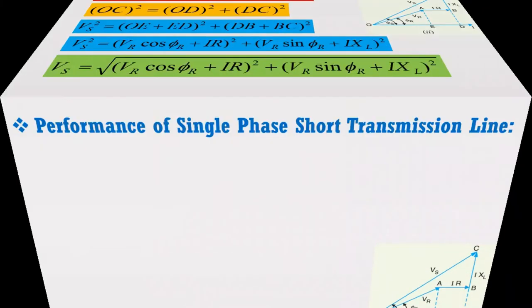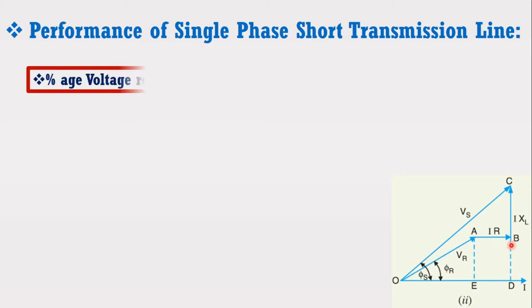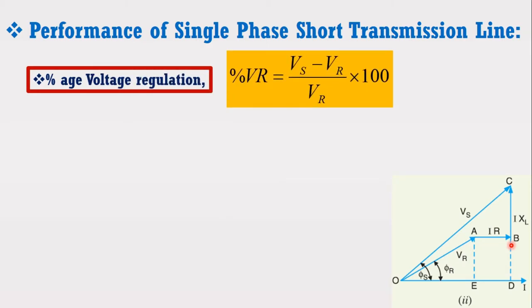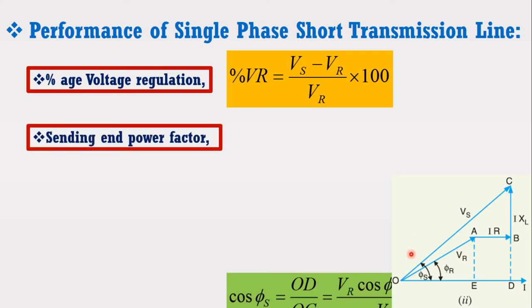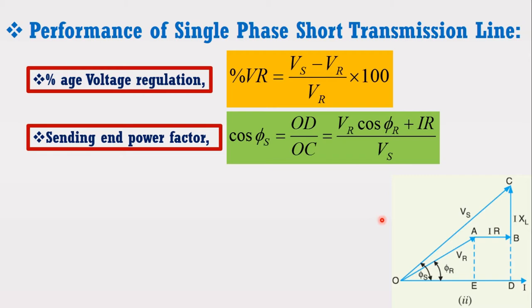Now, the percentage voltage regulation for single phase short transmission line is given by the following expression. From the figure, the sending end power factor becomes equal to OD upon OC. Putting the values of OD and OC, we get the sending end power factor as below.